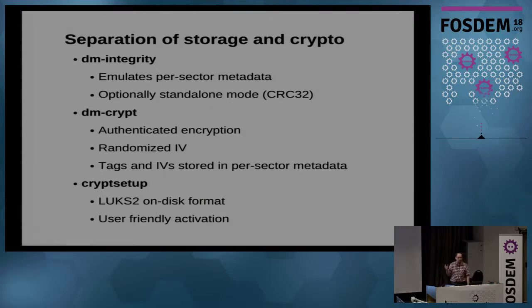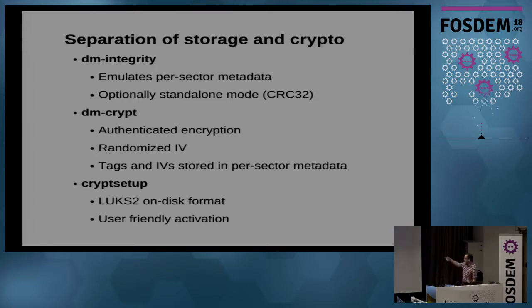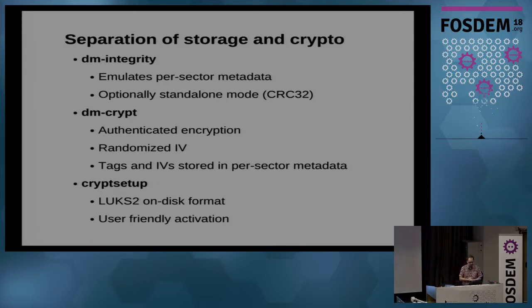We later added a standalone mode where DM Integrity can calculate integrity data itself. But the first idea was to implement authenticated encryption, with DM Integrity as the metadata provider for DM Crypt. The solution adds authenticated encryption and a randomized initialization vector. The last part is a user-friendly wrapper — cryptsetup using a new on-disk format — so you don't need millions of command-line parameters.